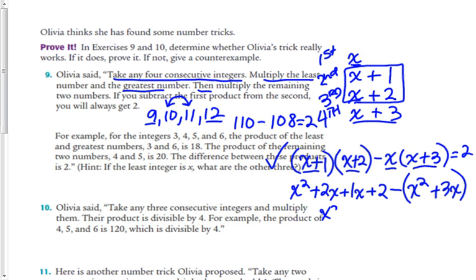So I get x squared plus 3x plus 2 minus x squared minus 3x. And here I have plus 3x, and here I have minus 3x, so that's 0. Here I have x squared, and here I have minus x squared, so that's 0. And notice that the only thing you're left with is 2. So this algebra shows that her conjecture is true.